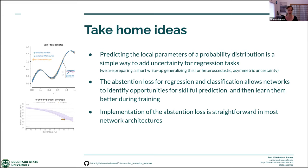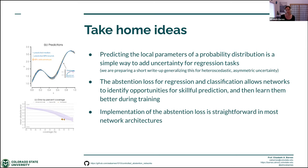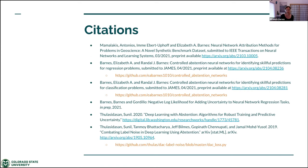Implementation of the abstention loss is really straightforward — it just involves changing the number of outputs you're predicting and the loss function. What that means is it can be applied to a wide variety of network architectures, not just feed-forward networks as we did here. My slides will be shared, and I have some citations. I can take any questions.